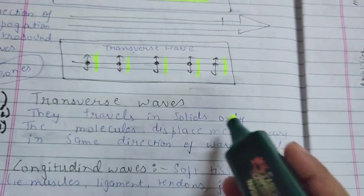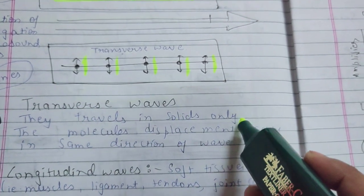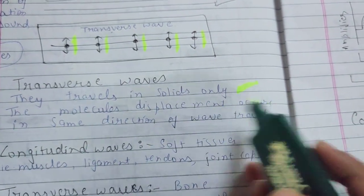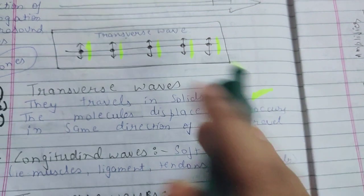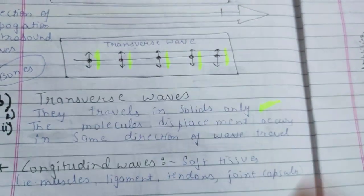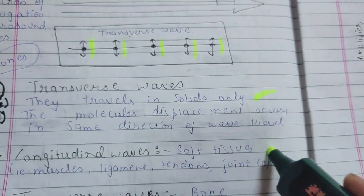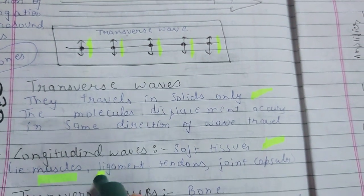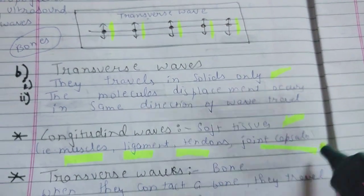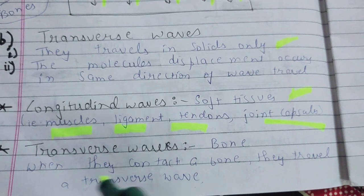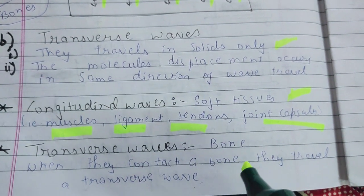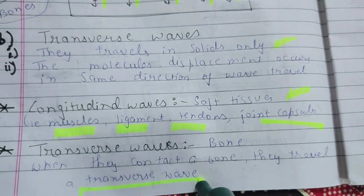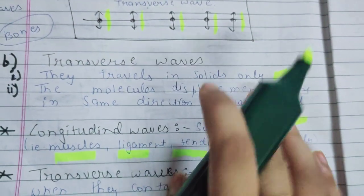Transverse waves travel in solids only, like bones. The molecular displacement occurs perpendicular to the direction of wave travel. Longitudinal waves are applied in soft tissues like muscles, ligaments, tendons, joints, and capsules. Transverse waves are applied in bones — when ultrasound waves contact the bone, they travel as a transverse wave. So these are the two types of waves: longitudinal and transverse.